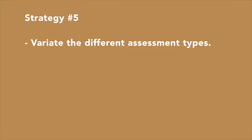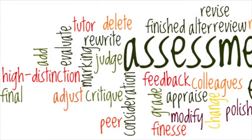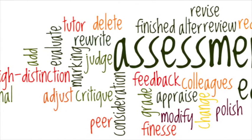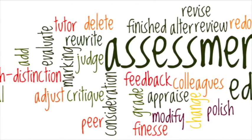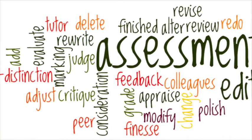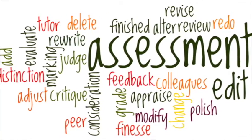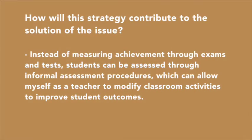The fifth strategy I have adopted is to vary assessment procedures. Instead of measuring achievement through exams and tests, students can be assessed through informal assessment procedures, which can allow me as a teacher to modify classroom activities to improve student outcomes. Different assessment types can include using concept maps, six-sided dice questions, getting students to create songs, role plays and dances, and getting students to create diagrams and posters. For example, the six-sided dice can be used to assess student learning by asking different questions such as: What did we do in class today? Why did we do it? What did I learn? What did I enjoy? What am I still confused about? And what do I want to remember from today's lesson? These questions allow me to understand what students have learnt and plan and modify future lessons, while also allowing students to reinforce what they have learnt and identify what they need to improve on.